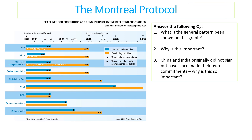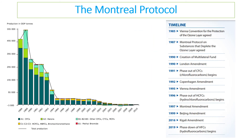HCFCs are less damaging because they don't last as long in the atmosphere, but they're still important to remove. Industrialized countries started using these chemicals earlier and then cut them out, but developing countries continued using some chemicals. The plan is for developing countries to continue phasing out HCFCs by 2030. China originally did not sign the Montreal Agreement but has since made its own commitments. The production of ozone-depleting substances has shown a rapid decrease over recent years.